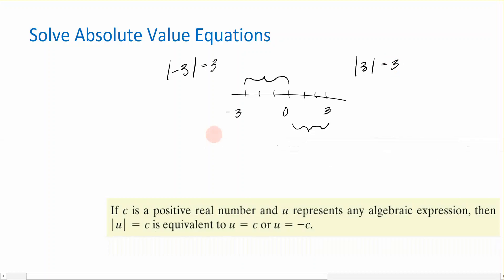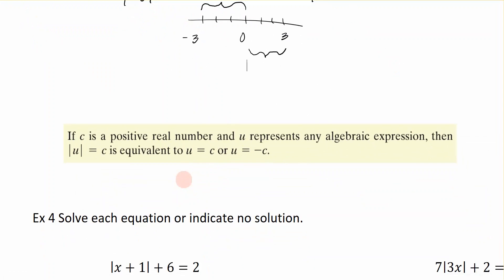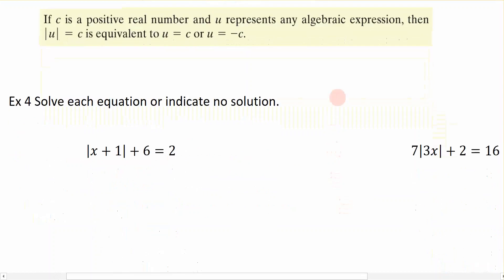Now, how does that play into our equations? Well, if I have an equation where the variable is in the absolute value bars, then we would solve it by taking the variable, setting it equal to a positive c, and again, we solve it a second time for a negative c. So that's how we're going to solve our absolute value equations.